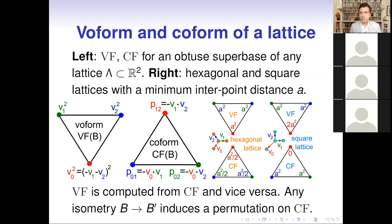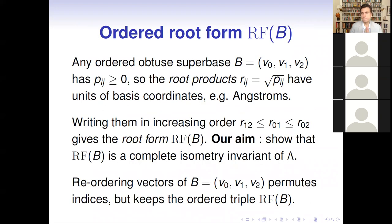We now introduce a more convenient object called the root form: an ordered triple of numbers. Since co-norms are non-negative, it is natural to take their square roots, because then the units of the root products will be the same as coordinates in the basis — for example, if coordinates are measured in ångströms, these root products will also be in ångströms.